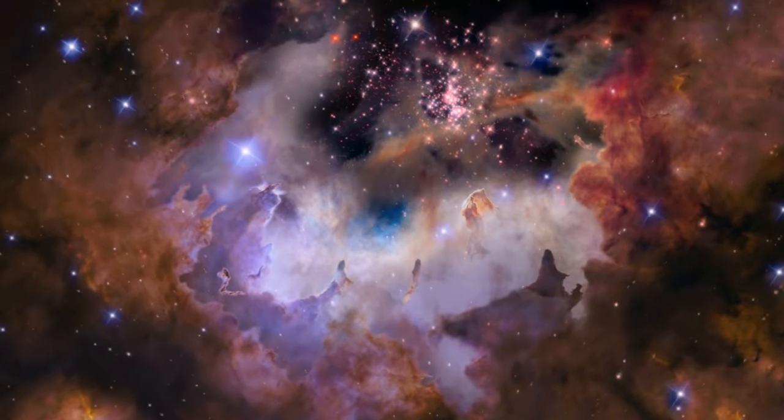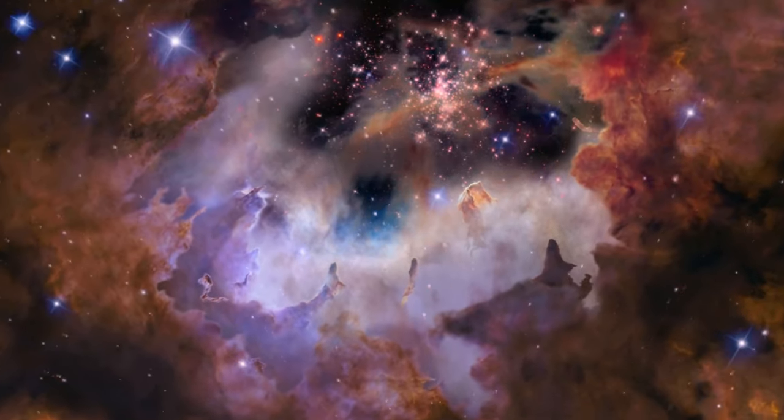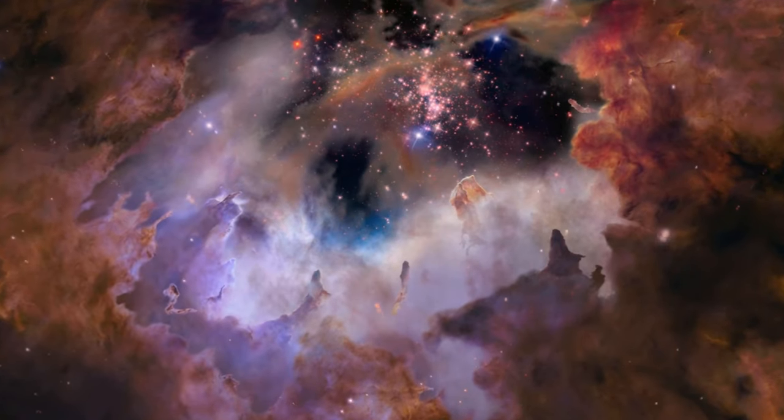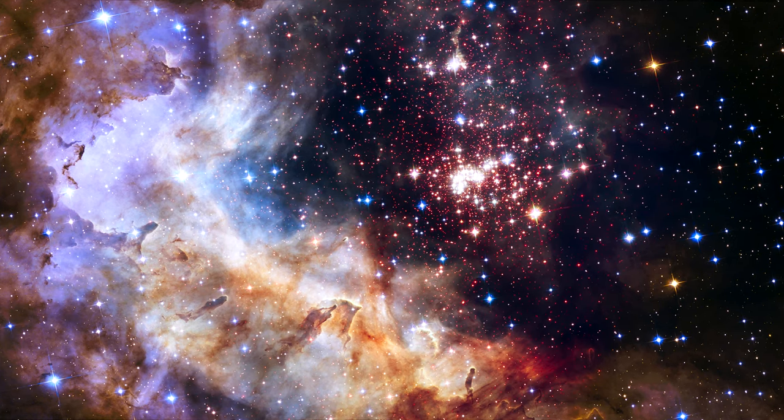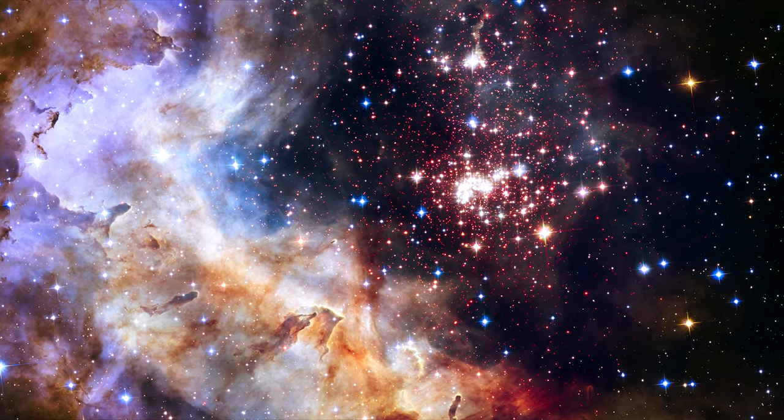They found that the most massive and brightest stars in the cluster are found in the core. Westerland 2 contains at least 37 extremely massive stars, some with up to 100 solar masses.